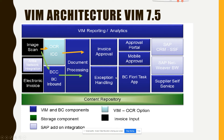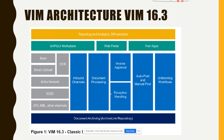Now this is VIM 16.3, which is the normal version that most people use. If you notice, they've changed it a little to make it more clear. You have scan via Enterprise Scan, email, upload, Ariba Network, IDOC, and API/XML — for example, if an API from another system is sending invoices. All these are different avenues, and you configure inbound channels based on them. Once the inbound channel is configured, it hits document processing, which is inside SAP. From here, everything — Fiori apps and SAP GUI workplace — is all SAP.